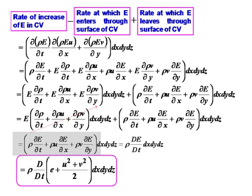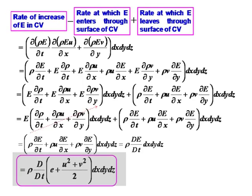E is changing not only with time but also with position x and y by virtue of velocities u and v. This is a total (substantial) derivative: ρ·De/Dt. What is e? It is the sum of thermal internal energy and kinetic energy: e = C_V·T + (u² + v²)/2, taking only 2D.